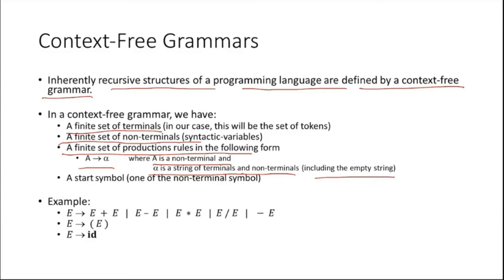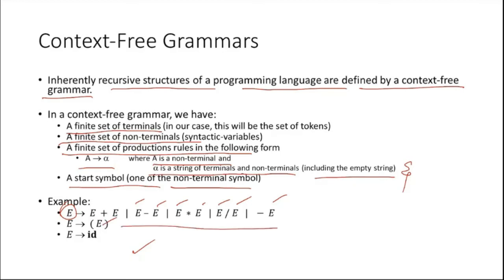Here A is a non-terminal and alpha is a string of terminals and non-terminals, including the empty string. So alpha can be epsilon or the empty string as well. There must also be a start symbol defined — one of the non-terminal symbols. Here is an example grammar where E is the start symbol, which can be used to evaluate simple arithmetic expressions.